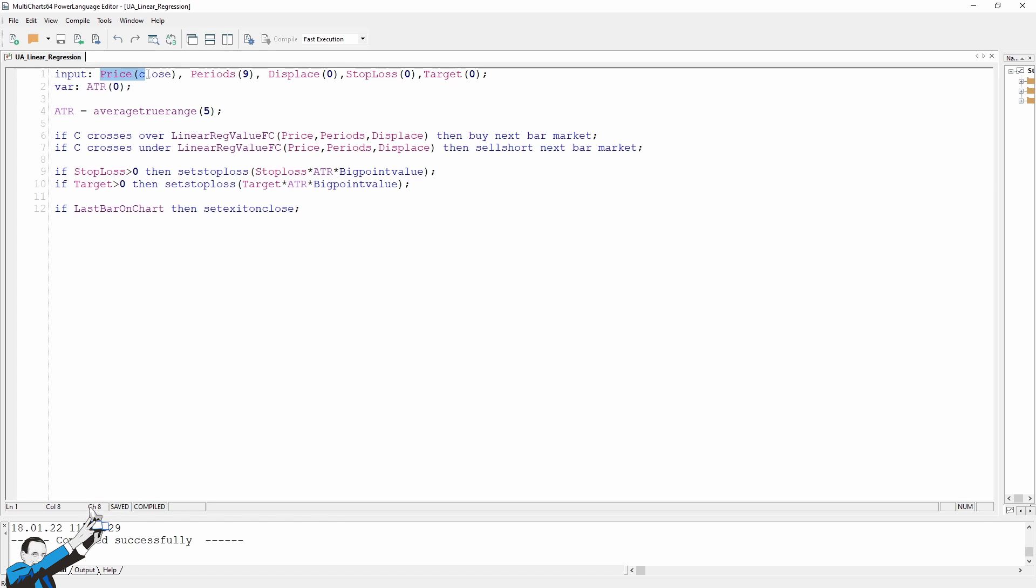We've inserted, as usual, some inputs, which you can see here. The first three, price, periods, and displace, are simply the inputs that this function needs to calculate the linear regression, so it will calculate the close of the last n periods. In this case, we've left the default 9, with a displace of 0. Simply, the displace is used to translate the value of the indicator forward or backward by x-bars. Now we'll leave it at 0 because we want to see the basic linear regression.